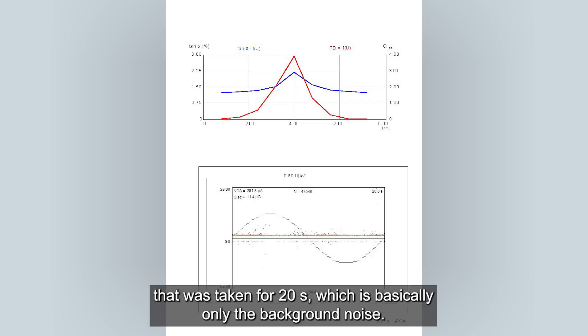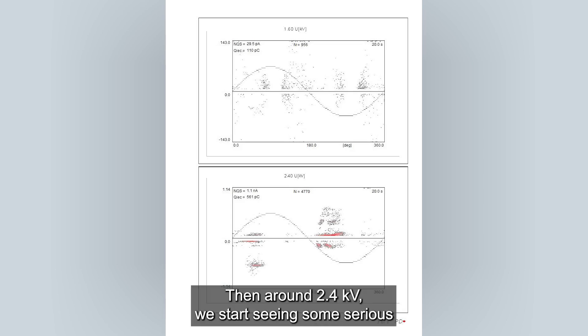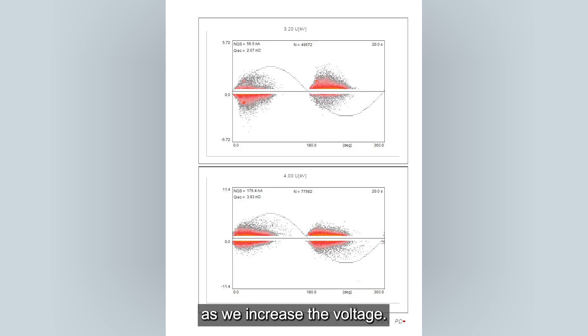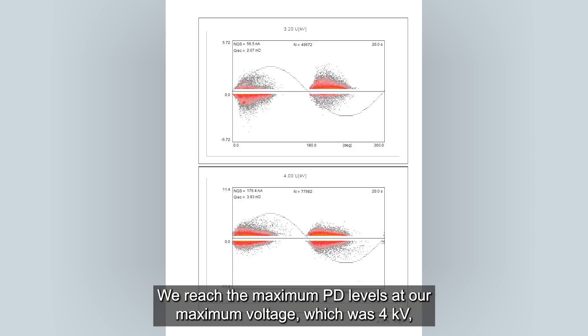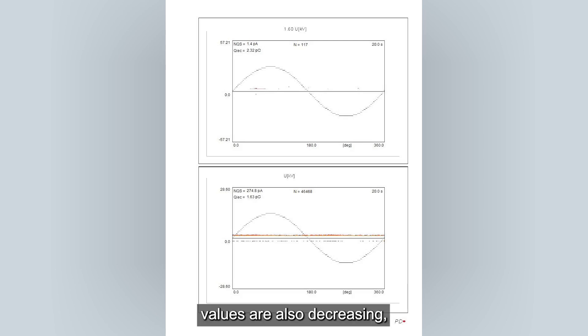Then we see PRPD at each voltage level. Then around 2.4 kV, we start seeing some serious partial discharge signals which increases as we increase the voltage. We reach the maximum PD levels at our maximum voltage, which was 4 kV. And as we ramp down the voltage, we see the PD values are also decreasing until we get back to our background noise.